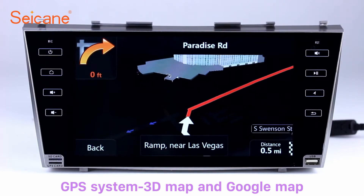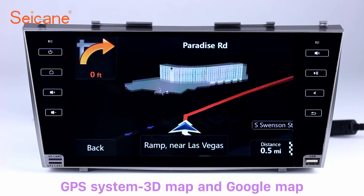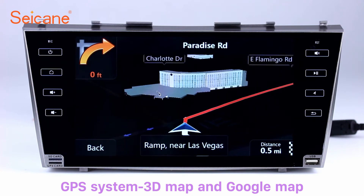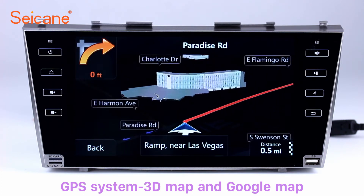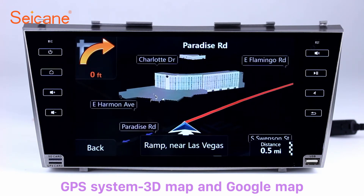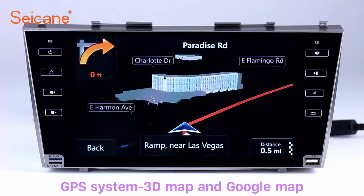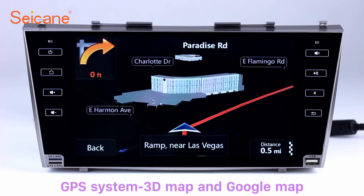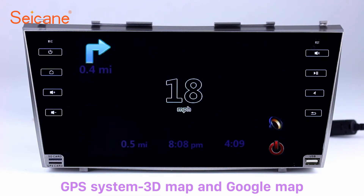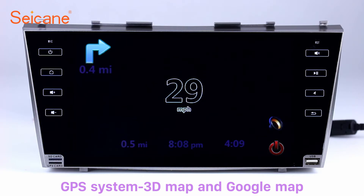GPS. Go to the main menu and open the GPS system. The 3D navigation map shows you accurate GPS locations and route information. It also supports Google Maps. You will never get lost with this function.